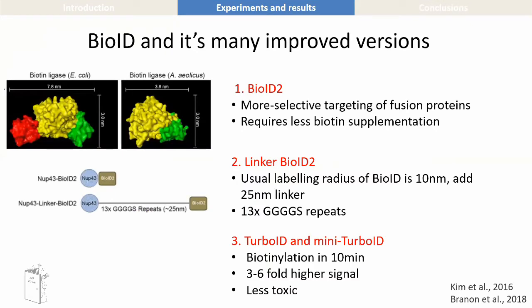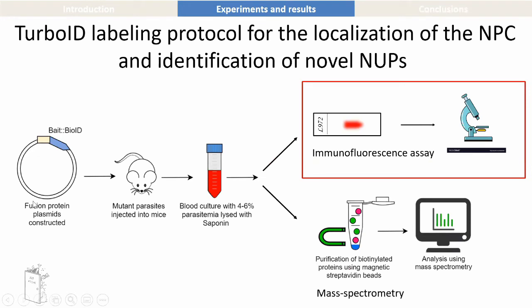Now there's not just one version of the BioID. The original biotin ligase was created by Kyle Drew. The second version was BioID2, which was a more selective targeting version — a manipulation of the original enzyme. The linker BioID2 was an enzyme with a linker attached — a repeat of DGGGGS — just to increase the labeling radius; it's like using a longer fishing rod. The last one was TurboID, which was really impressive: while BioID2 took 18 hours to biotinylate proteins, TurboID did this in 10 minutes. It was a mutated version of previous enzymes and was found to be much, much better.